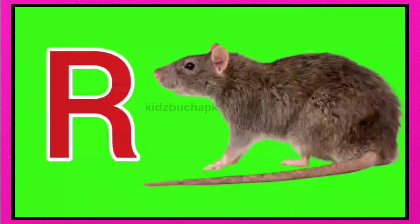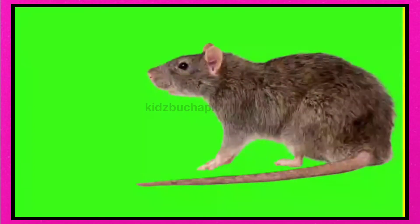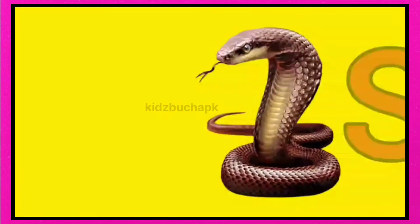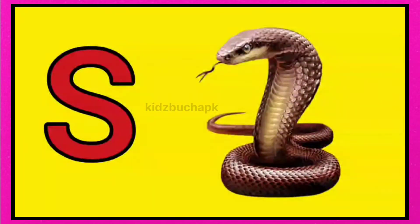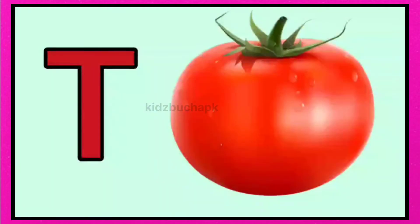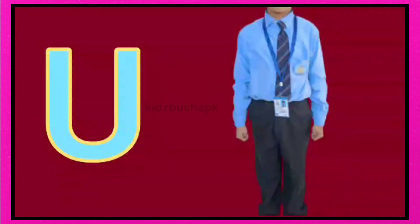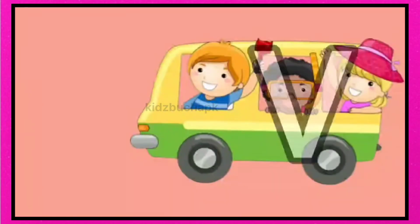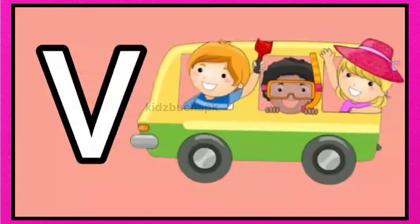R for rat, rat means chuhah. S for snake, snake means saap. T for tomato, tomato means tomato. U for uniform, uniform wordi. V for van, van means wagon.